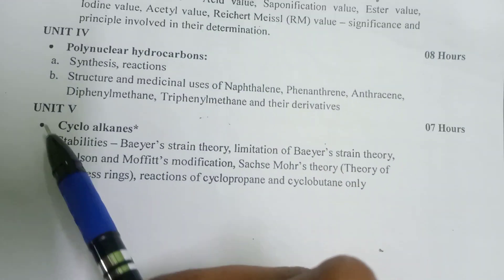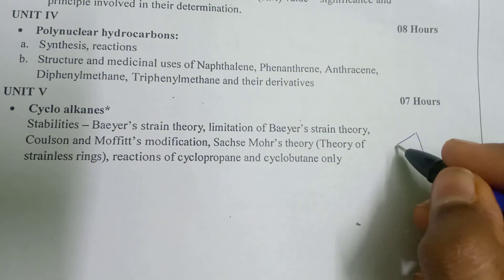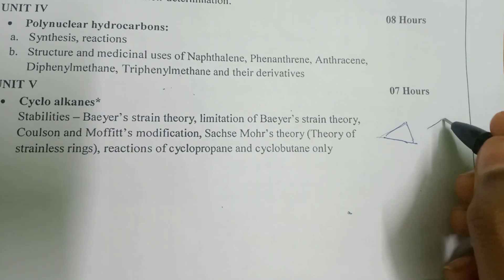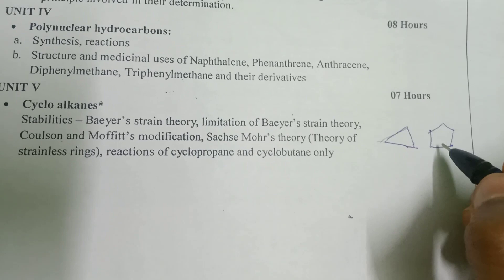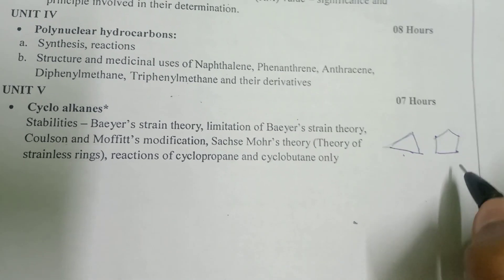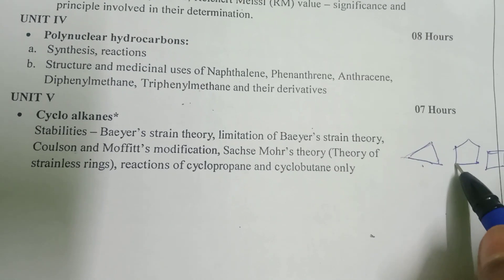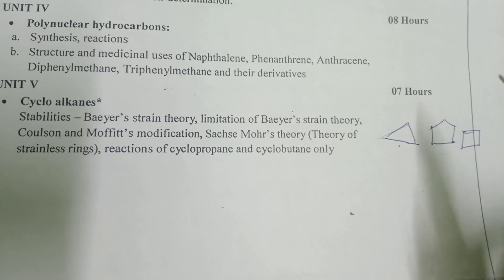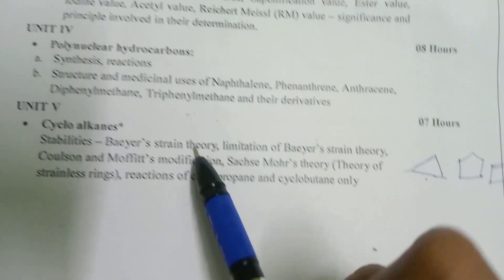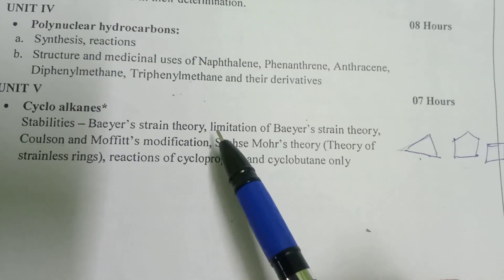The fifth and last unit is very important — cycloalkanes. This covers cyclopropane, cyclobutane, cyclopentane, and cyclohexane. Cyclobutane has angle strain. Angle strain is calculated using Baeyer strain theory — this is very important.